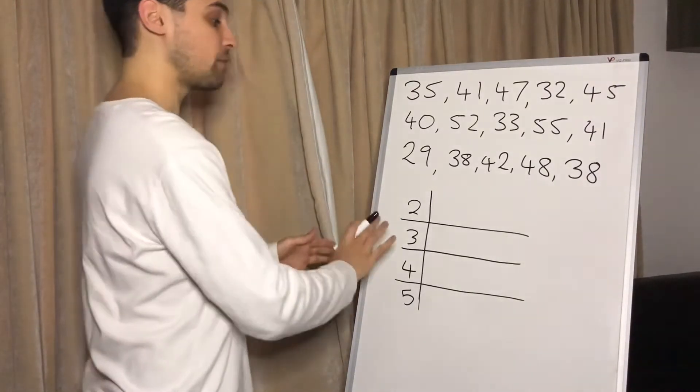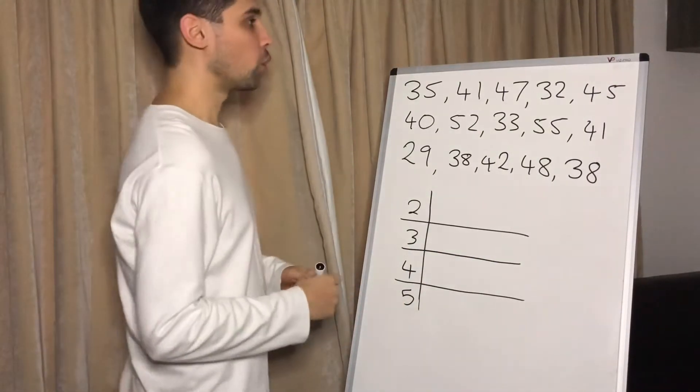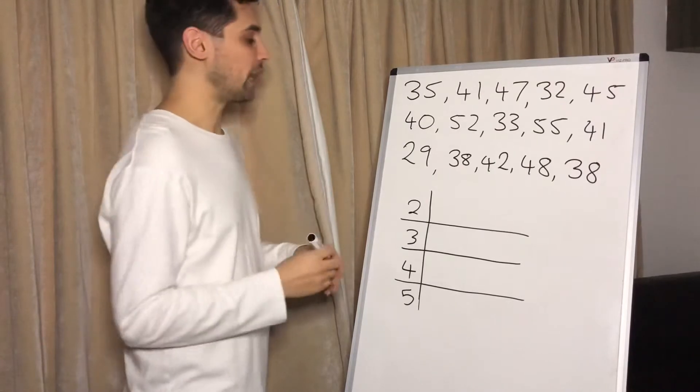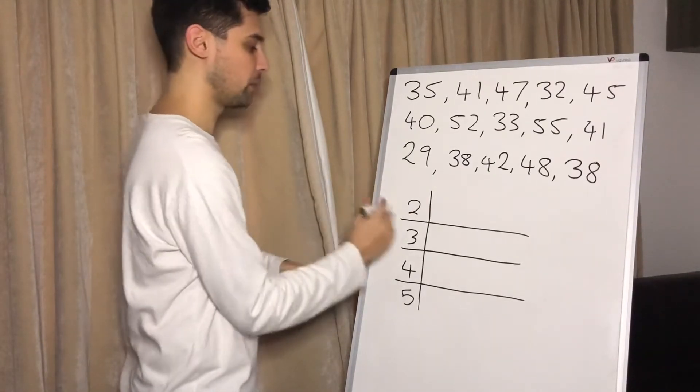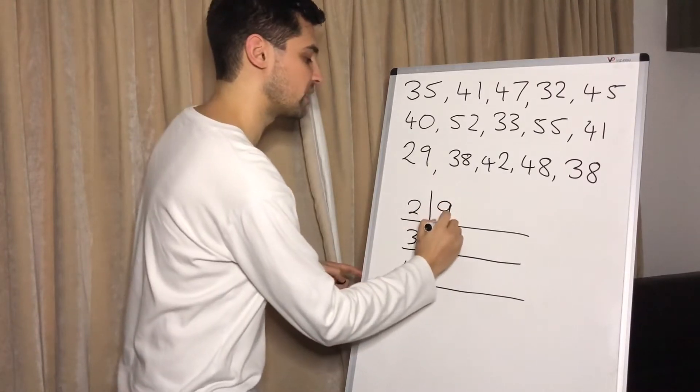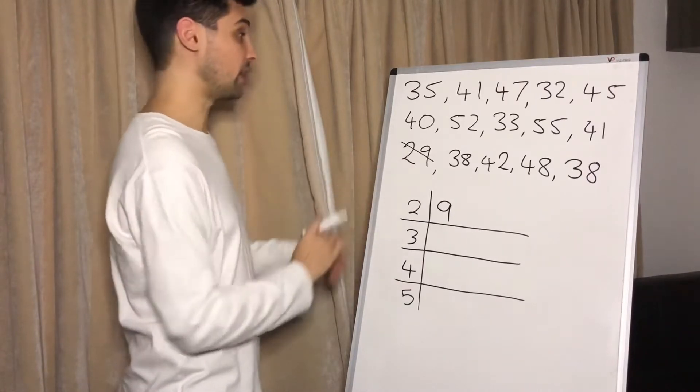Now these have to be in order, so often a question will say an ordered stem and leaf diagram. So this is the area we have to be really careful on, putting them in the correct order. Now obviously we've only got one number in the 20s here, so we can safely put a 9 there, that's no problem. And let's cross that out just so we know not to count that, we've already done that one.